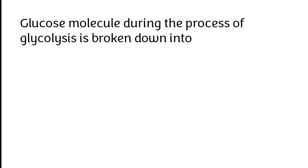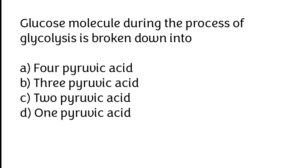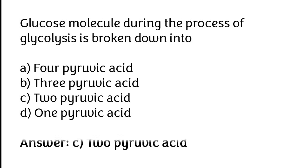Glucose molecule during the process of glycolysis is broken down into 2 pyruvic acid. The correct answer is option C. Glucose molecule during the process of glycolysis is broken down into 2 pyruvic acid.